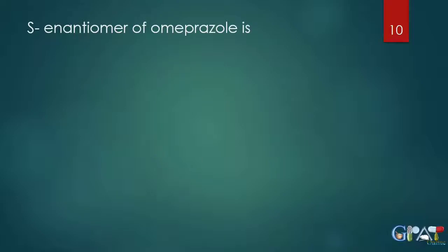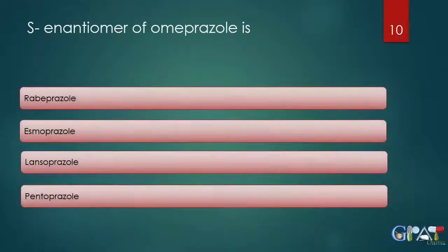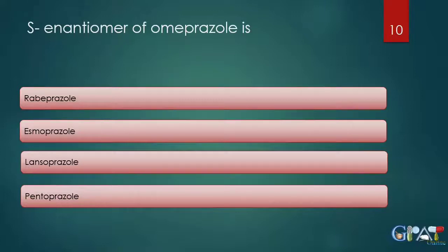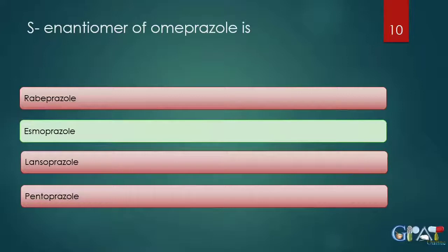Next question: the S-enantiomer of omeprazole is — rabeprazole, esomeprazole, lansoprazole, or pantoprazole? Omeprazole has S and R enantiomers. The S-enantiomer is the active form, and that is esomeprazole. Esomeprazole is the S-enantiomer of omeprazole.